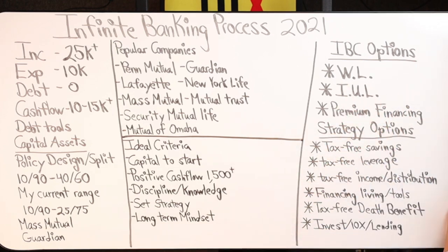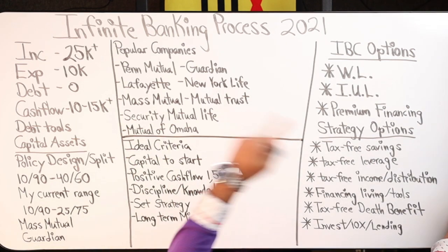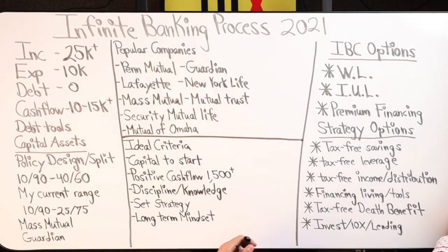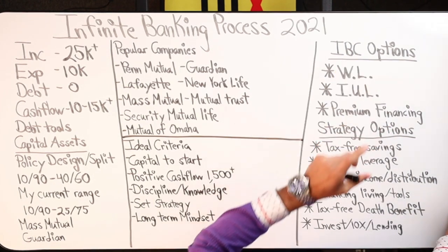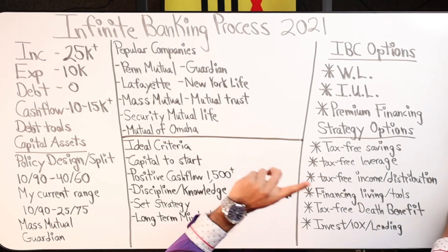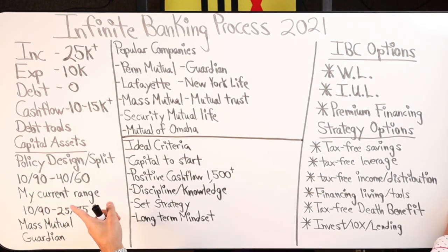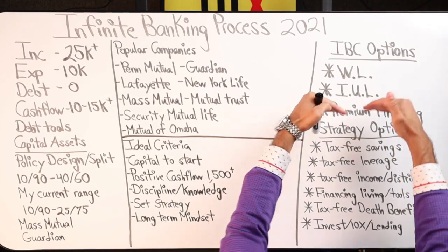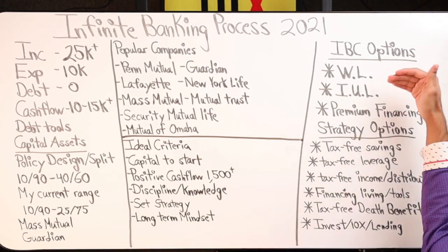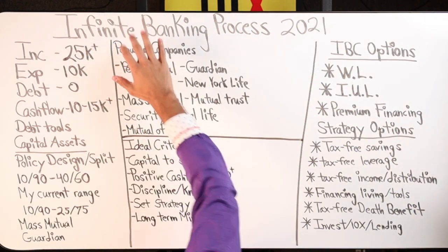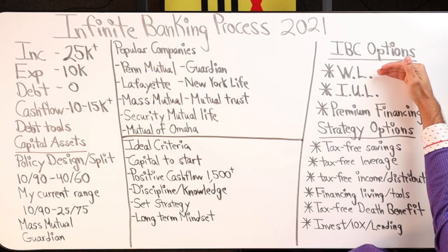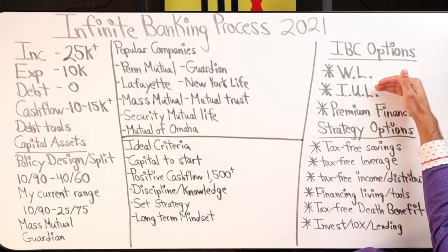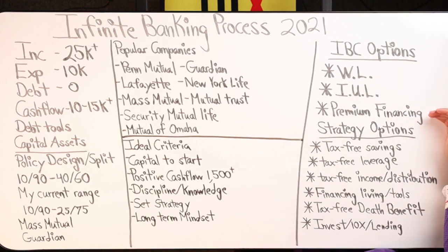That'll really help you when talking to any insurance agent, whether they are experienced, inexperienced, or have no knowledge of infinite banking. Those are the three most popular IBC options. Next, we're going to look at policy design and your split options. In the infinite banking space you're either going to end up with a whole life product, some kind of index universal life insurance product, or you're going to go premium financing.